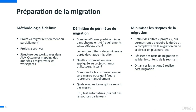Les périmètres de migration : on va définir combien d'items on va migrer — requirements, tests, defects, releases. On déterminera avec nos clients quels items conserver, quelles customisations récupérer et appliquer au projet — notamment les champs, les utilisateurs, les listes — et surtout quels sont les items qu'on ne saura pas migrer, par exemple les BPT et certains tests automatisés.